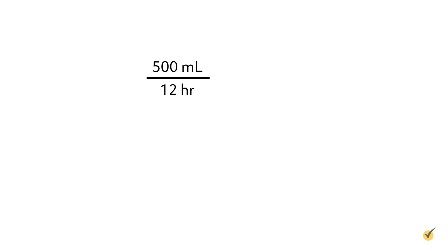Here's a tip: when the IV tubing is microdrip — 60 drops per milliliter — the drops per minute will be the same as the milliliters per hour. For example, you have 500 milliliters to infuse over 12 hours with a microdrip set. The total volume, 500 milliliters, divided by the total time in hours, 12, equals 41.6, rounded to 42 milliliters per hour.